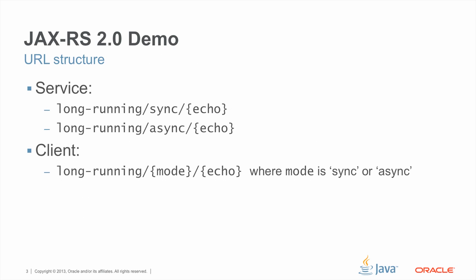This is the URL structure for the demo. From the service perspective, we have two different services implemented with two different URLs: long-running/sync/echo and long-running/async/echo. The echo here is a path parameter, and it's going to take the ID of the request, as we shall see when we look at the source code.